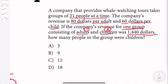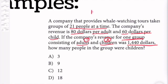So I know they take 21 people in one group. I'm going to let x equal the number of children and y equal the number of adults.